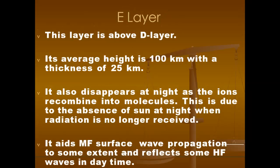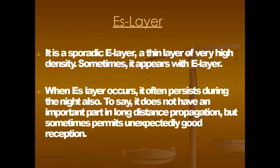E layer: this layer is above the D layer. Its average height is 100 km with a thickness of 20 km. It also disappears at night as ions recombine into molecules due to the absence of sunlight when radiation is no longer received. It aids medium frequency surface wave propagation to some extent and reflects some high-frequency waves in daytime. Es layer: it is a sporadic E layer — a thin layer of very high density that sometimes appears within the E layer region and persists during the night also. It does not play an important part in long-distance propagation but sometimes permits unexpectedly good reception.